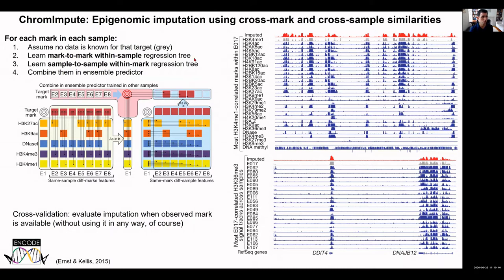The core methodology is ChromImpute, a tool Jason Ernst developed in my lab, which leverages both within-sample and within-mark inferences to predict a target dataset before it is observed, at very high resolution. Examples of these predictions match the observed data quite nicely, thanks to the similarity of different marks within the same cell type, as well as the similarity of different cell types for the same mark.